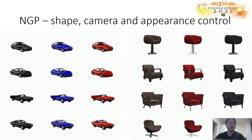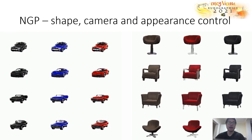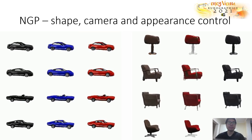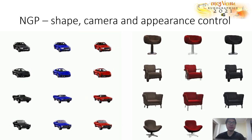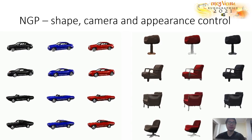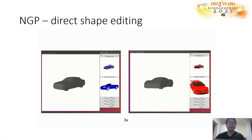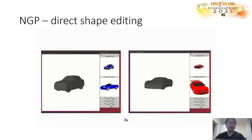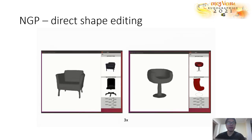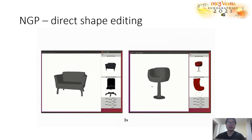This video shows the results by controlling the shape, camera, and appearance in the generated images. This method also supports user-direct editing over the shape geometry. We can rescale the shape for producing a longer or higher car, as we can see in the video. The same thing can also be done on chairs — you can stretch it and rescale it to produce different images.